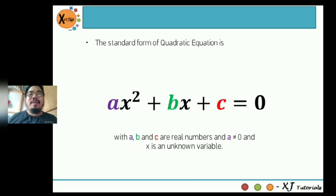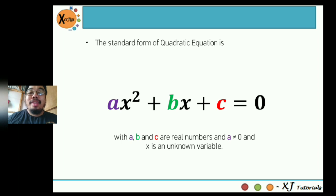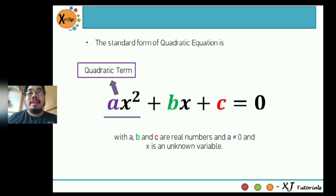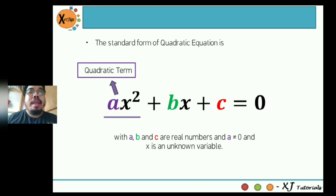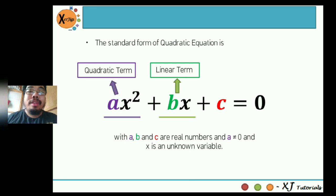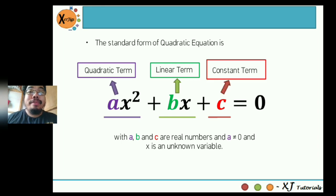So furthermore, the standard form of a quadratic equation is ax squared plus bx plus c is equal to 0, wherein a, b, and c are real numbers, and a should not be equal to 0. And x is your unknown variable. On this equation, ax squared is the quadratic term — you can find the value of a beside x squared. bx is your linear term wherein you can find the value of b beside x. And c is your constant term — definitely, the value of c are pure numbers, meaning simple numbers without variables.